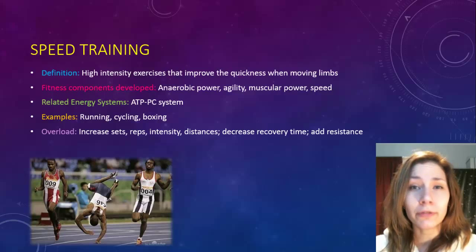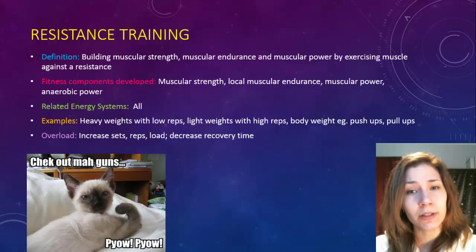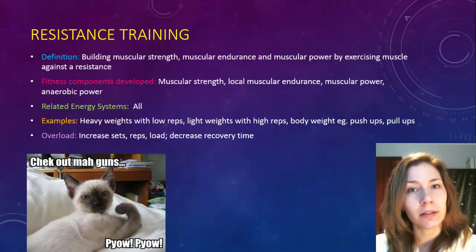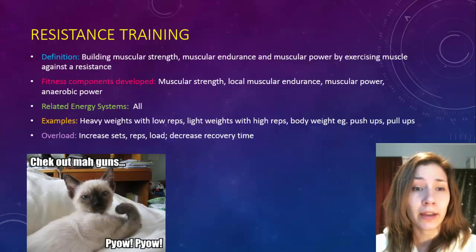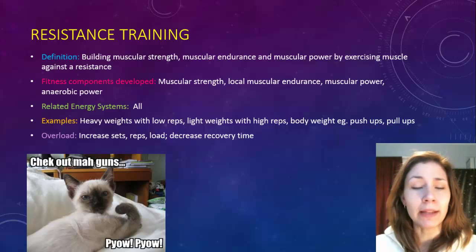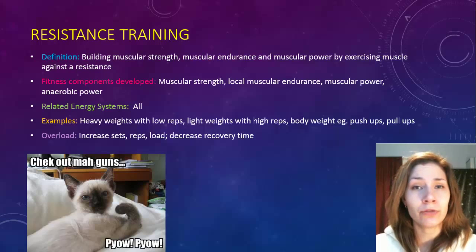Resistance training is building muscular strength, muscular endurance, or muscular power by exercising a muscle against a resistance. For local muscular endurance you'd use light weights with high reps, whereas for muscular strength you'd use heavy weights with low reps. How you balance your weight ratio with your reps will determine whether you're training strength, endurance, or muscular power. Muscular power will also include a speed component, so that needs to be included in your training program.